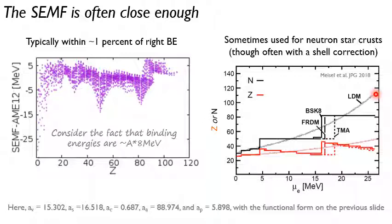So the proton number for the equilibrium nucleus is that red band. The neutron number is the black band. And then if you use proper state-of-the-art nuclear mass models, you instead get these rectangular-looking things. So you see that if you just need the general trend, liquid drop model totally good enough.